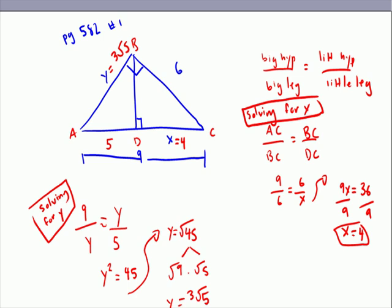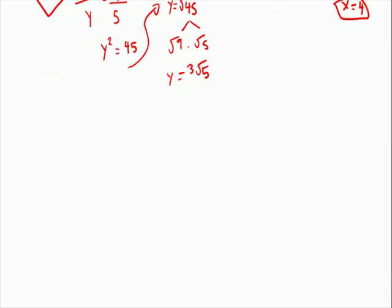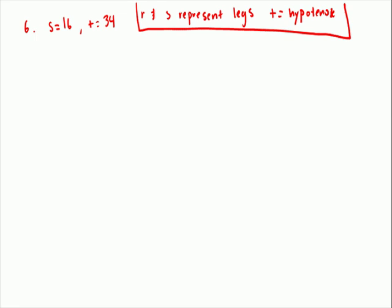All right, is there anything else? Should I do one normal Pythagorean theorem problem for you? Sure. I'm going to do number, which one? 4 through 7, give me one. Number 6, fine. S equals 16, and T equals 34. R and S represent legs, and T equals hypotenuse. Just in case nobody read the directions, you can tell that this is given in the directions, right?